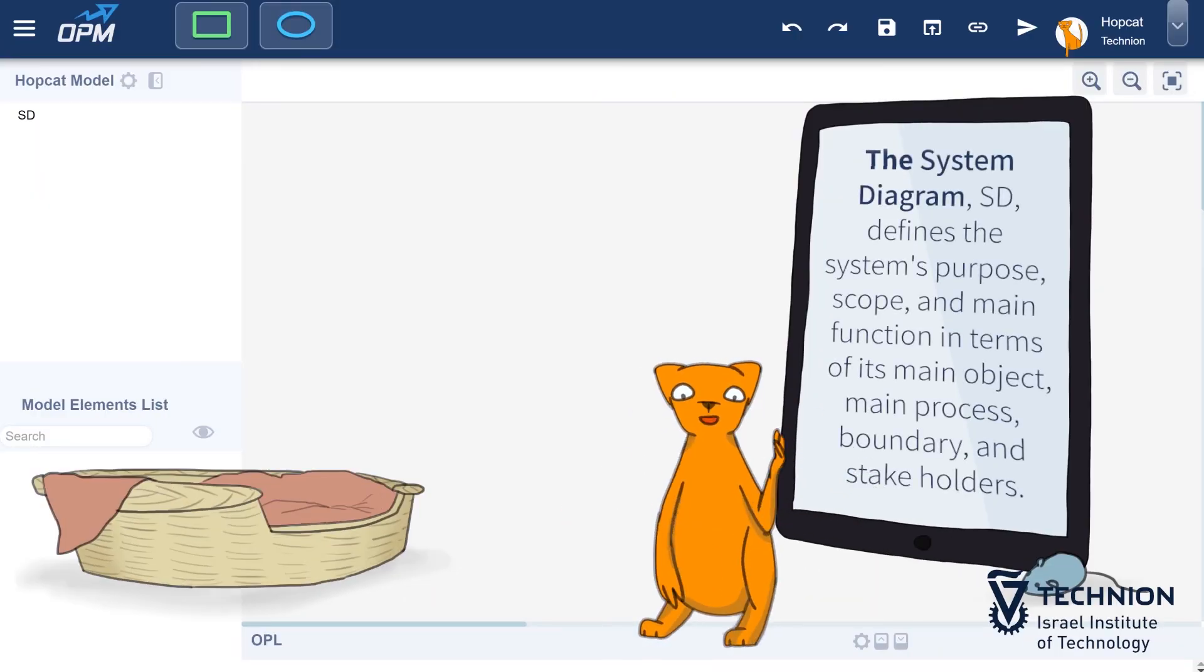The system diagram, SD, defines the system's purpose, scope, and main function in terms of its main object, main process, boundary, and stakeholders.